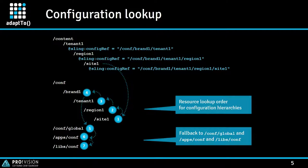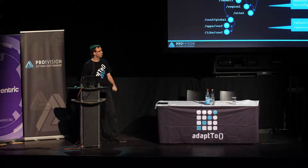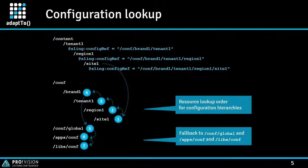How your tree looks is your choice, but often it mirrors the content tree because it's easy to map. Mapping from the content tree to the conf tree is done by setting sling:configRef attributes. In this example, I've used three attributes on three levels — one for the site, one for the region, and one for the tenant. Configuration values are stored within the conf tree. If no configuration is in place below the conf tree, there are fallbacks to /conf/global, then /apps/conf, and /libs/conf, allowing you to ship default values.